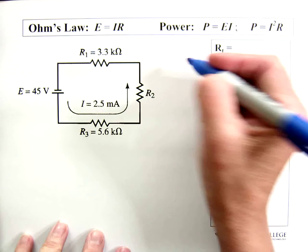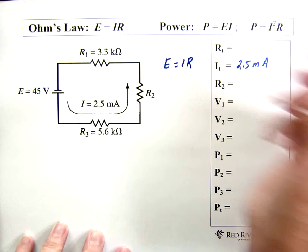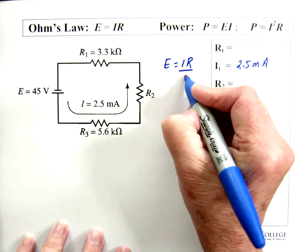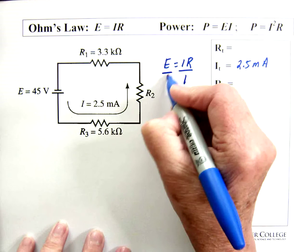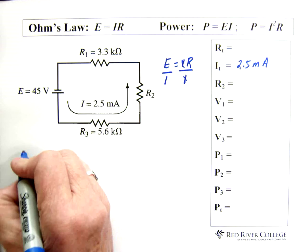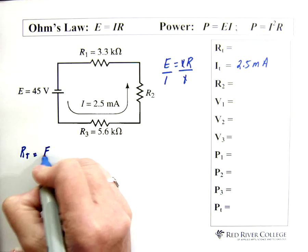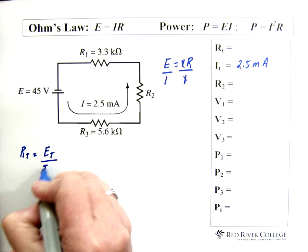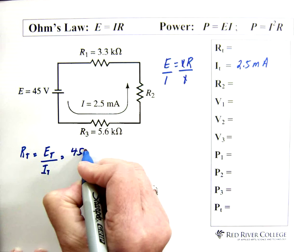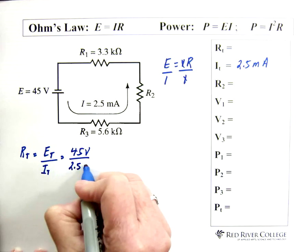So we know that E equals IR, and if we're going to solve for the total resistance, we can say, alright, let's divide both sides by I, and that will give us our total resistance. So then RT equals total voltage over total current. 45 volts is our total voltage and our current is 2.5 milliamps.